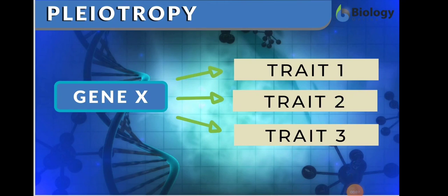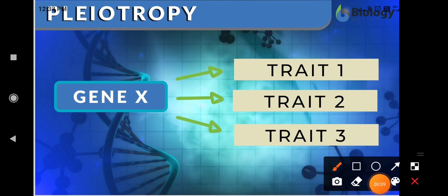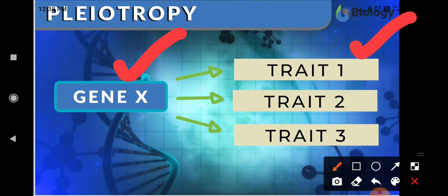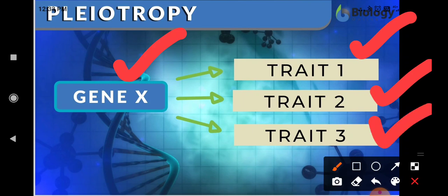Students, in this video we will see about pleiotrophy. What is pleiotrophy? A single gene can affect more than one trait, or can influence more than one character. A single gene can affect multiple traits and alter the phenotype of an organism — this is called pleiotrophy.